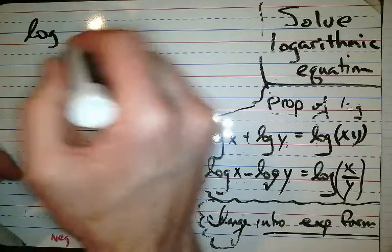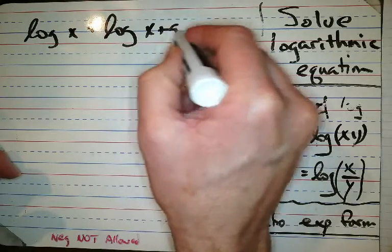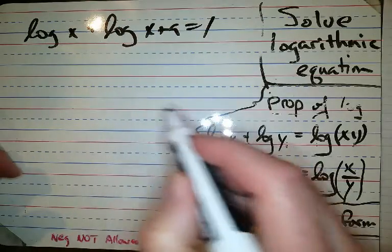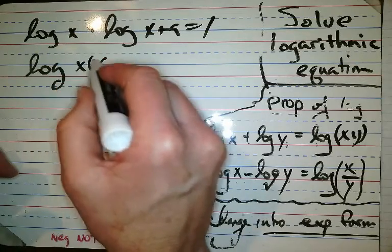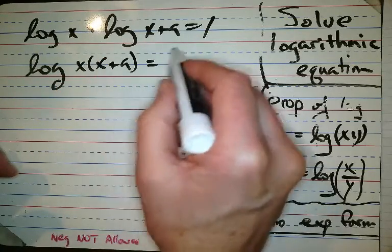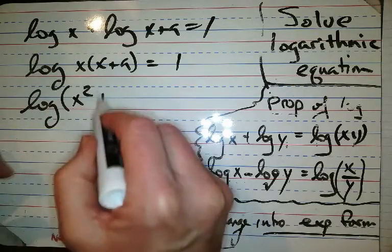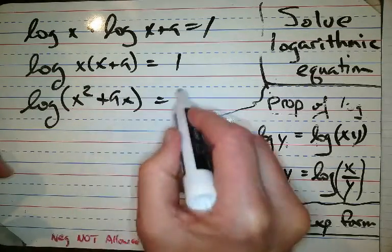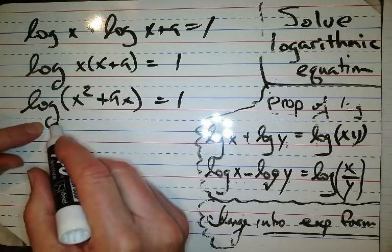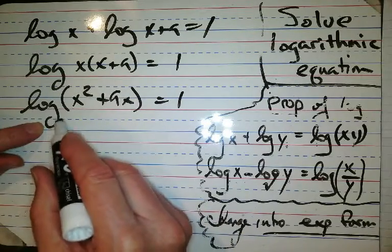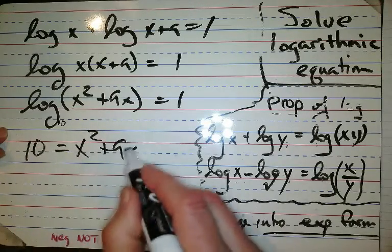Log x plus log x plus 9 equals 1. I know what that is. That's x times x plus 9. And that's just x squared. x squared plus 9x equals 1. And then what is that? That's 10, right? 10, 10, 10. You know if there's nothing there, that means 10 to the 1. That's 10 equals x squared plus 9x.